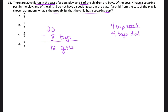Then it says, of the girls, 8 do not have a speaking part in the play. So if 8 girls don't speak, and there are a total of 12 girls, that means 12 minus 8 is 4 girls who have a speaking part in the play.